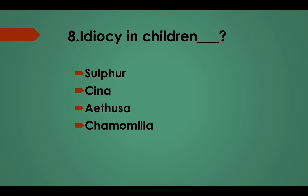Question No. 8: Idiocy in children — Option A, Sulphur; Option B, Cina; Option C, Aethusa; Option D, Chamomilla. Answer: Option C, Aethusa.